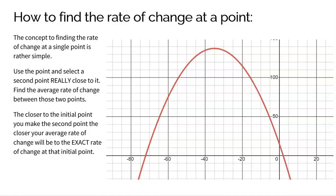So, how to find the rate of change at a point. The concept of finding the rate of change at a single point is actually rather simple. Let's say I want to find the rate of change at this point right here. That means I'm trying to find the slope of the tangent line at that point — if I were to draw a tangent line, I want to find the slope of that line because the slope is my rate of change.